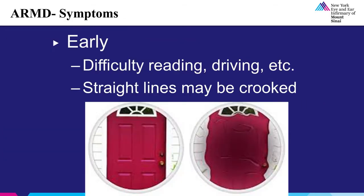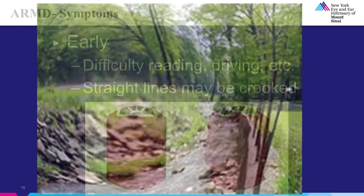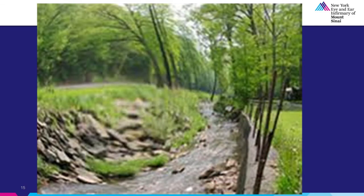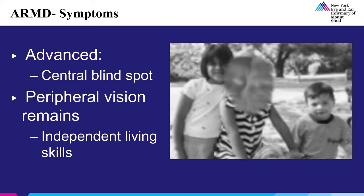With regards to symptoms of macular degeneration, in the earlier stages patients may have difficulty with reading or driving. When looking at straight lines, they may appear crooked or distorted. This image depicts what a person with visual distortion from macular degeneration may see when looking at a door. As macular degeneration becomes more advanced, patients may develop a central blind spot with intact peripheral vision.